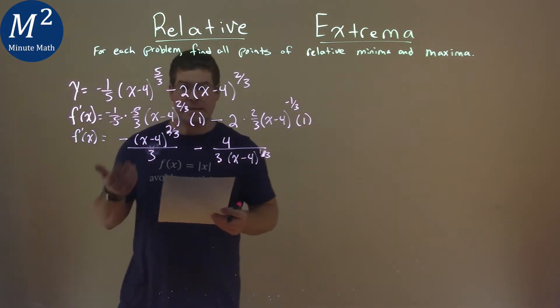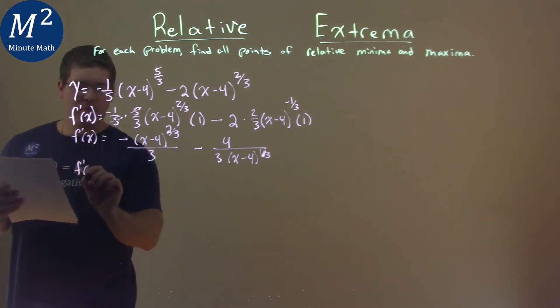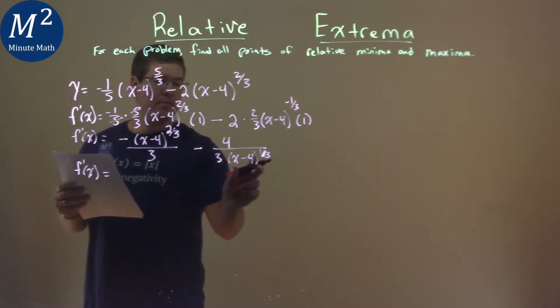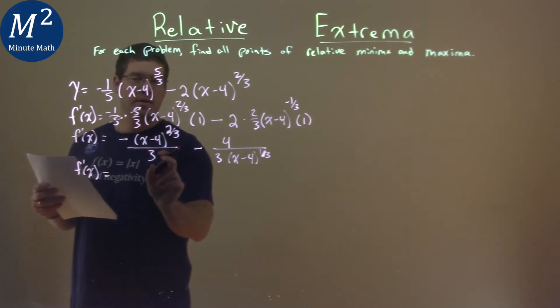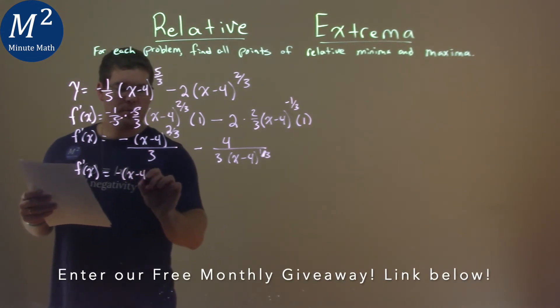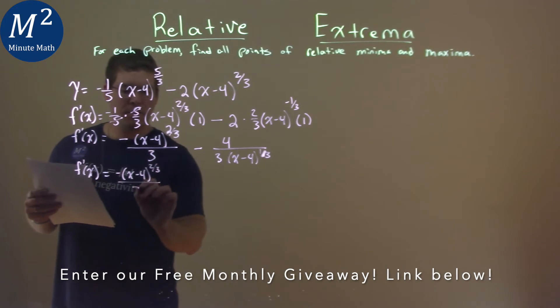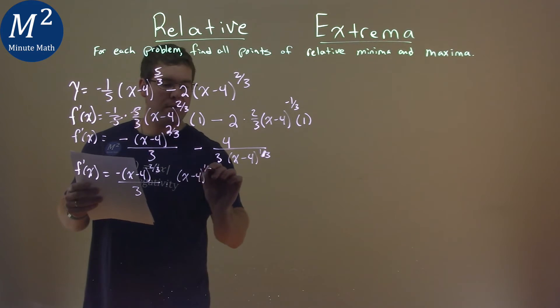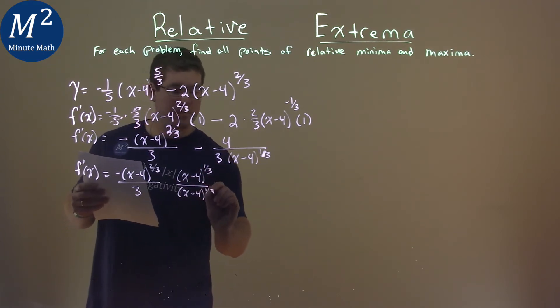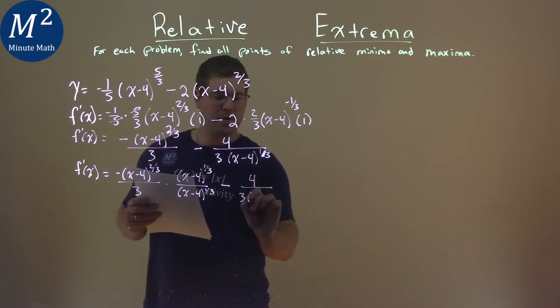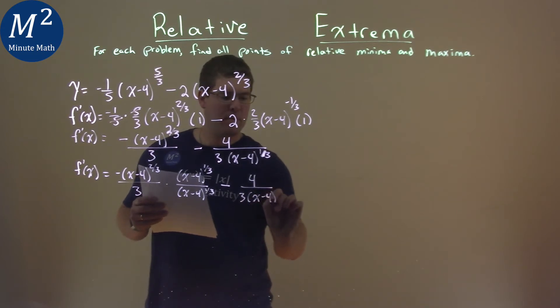We need to find a common denominator here. So, if I rewrite this, f prime of x, and notice if we just take this denominator and multiply it by the x minus four to the one-third power, we would have the same denominator, and we can combine it. So, we're going to do that. We have negative x minus four to the two-thirds power over three, and we're going to multiply it by x minus four to the one-third power over itself. And then rewrite this part here, four over three, x minus four to the one-third power.